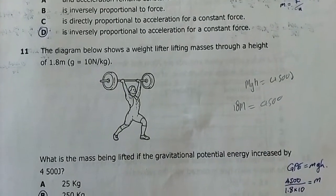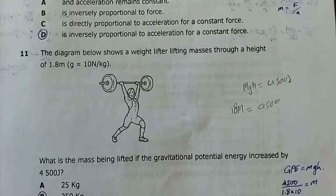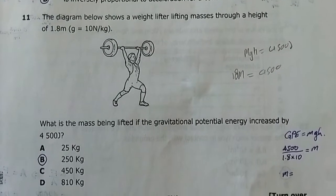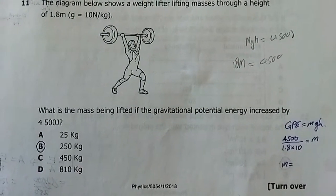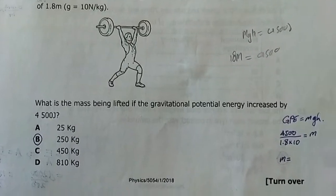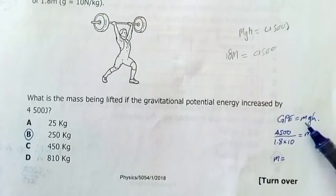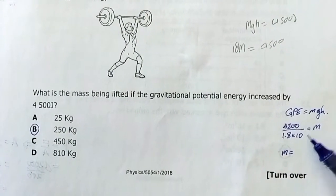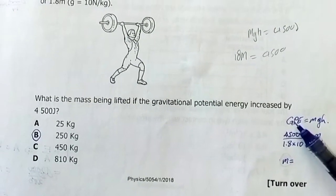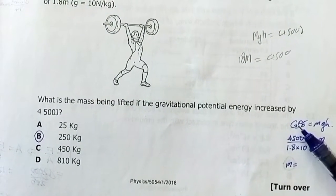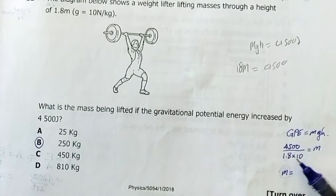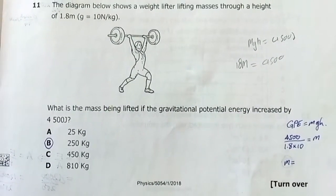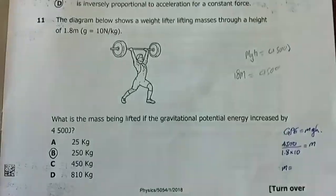Question 11: A weightlifter lifts masses through a height of 1.8 m. What is the mass being lifted if gravitational potential energy increases by 4500 J? Using GPE = mgh, making m the subject: m = GPE/(g×h) = 4500/(10×1.8) = 250 kg.